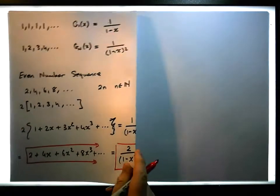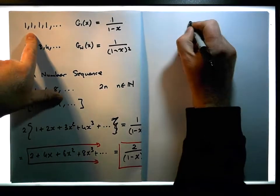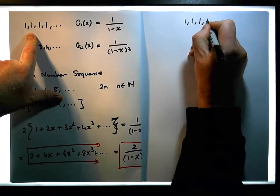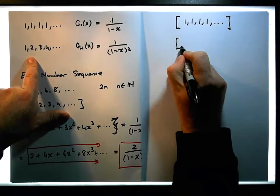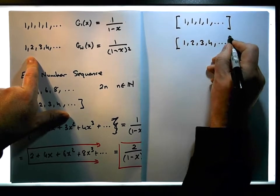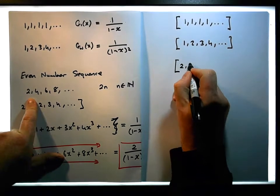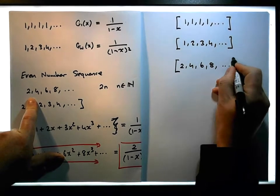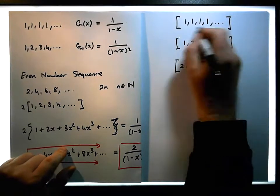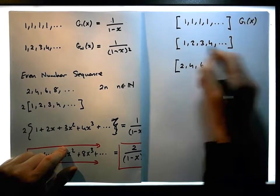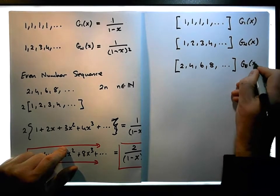Let's think about the sequences that we have. We have the sequence 1, 1, 1, 1, ... and we have the sequence of natural numbers: 1, 2, 3, 4, ... And now we've generated the sequence of even numbers: 2, 4, 6, 8, ... Associated with each of these, we've generated a generating function. Let's say the generating function for the ones is G1(x), for the naturals is Gn(x), and for the evens is GE(x).